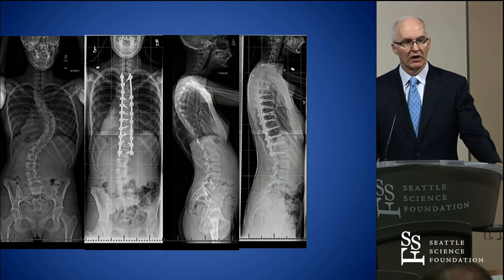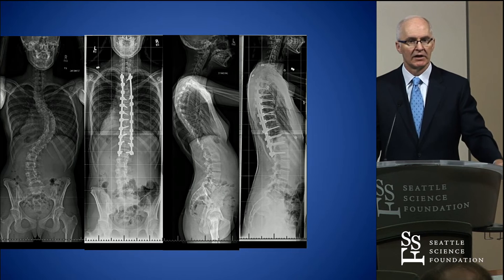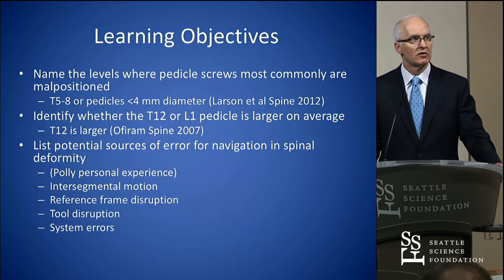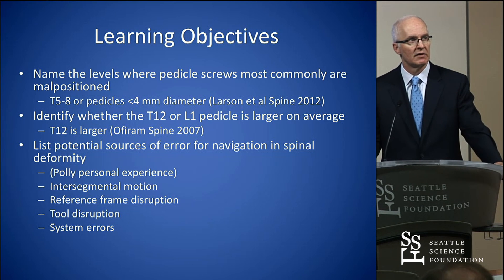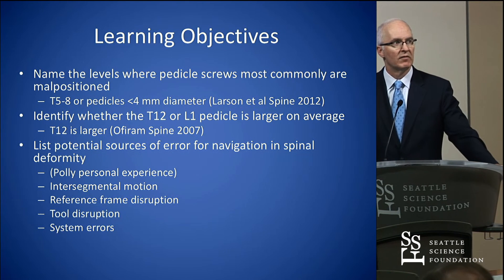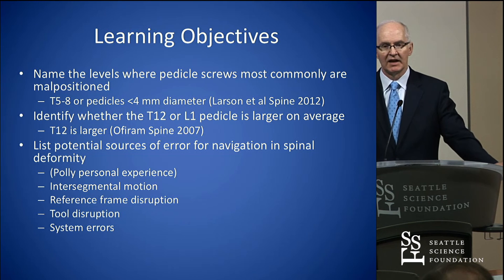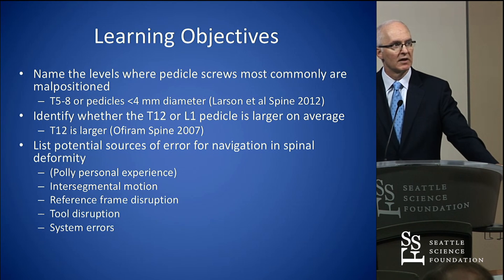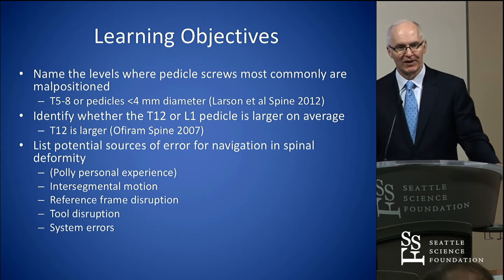Summarizing the learning objectives: the group did very well getting these right. T5 to T8 is where we have our biggest problem. T12 is bigger than L1. And all of the above are potential sources of error. Thank you very much.